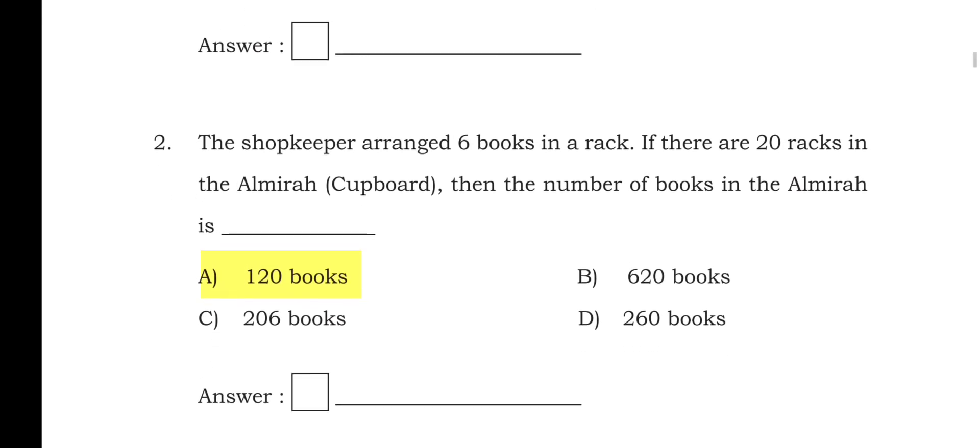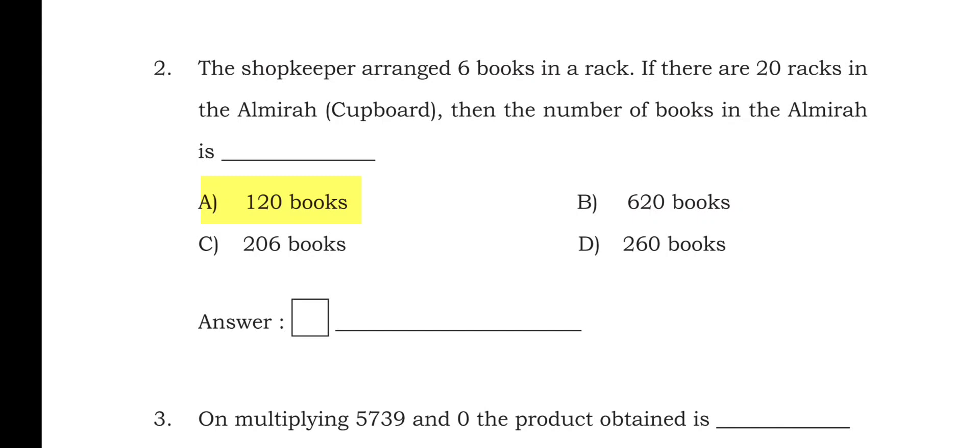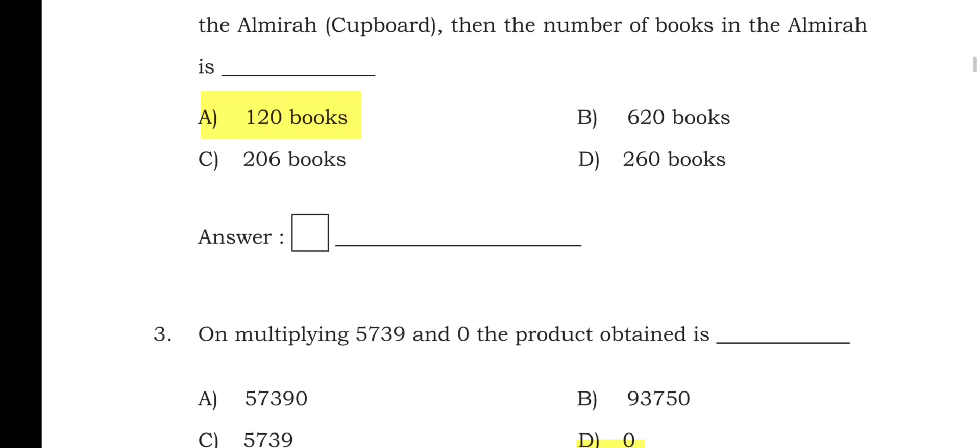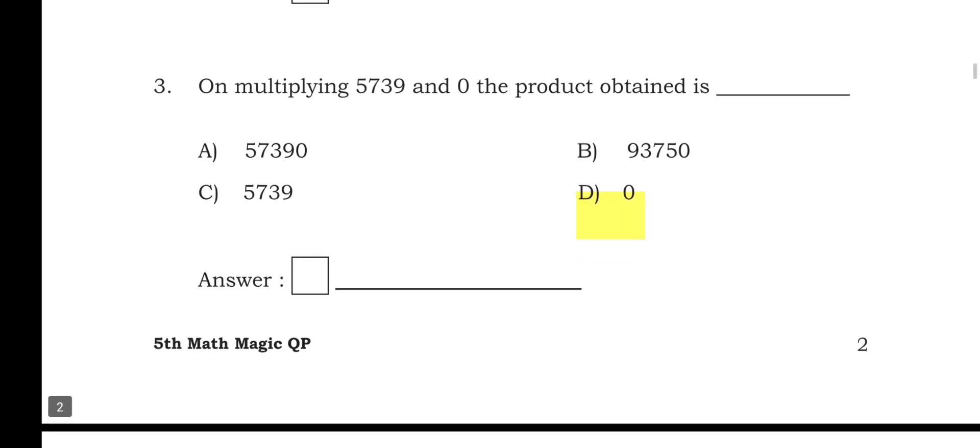Question 2: the shopkeeper arranged six books in a rack. If there are 20 racks in the cupboard, then the number of books in the cupboard is 6 × 20 = 120 books. Option A is the right answer: 120 books.